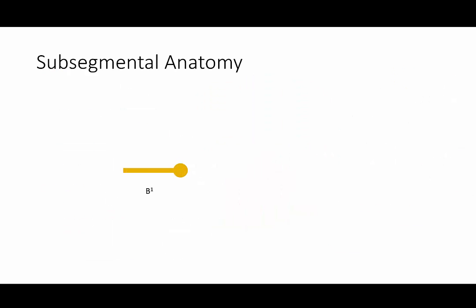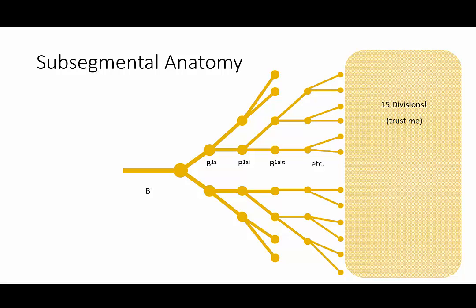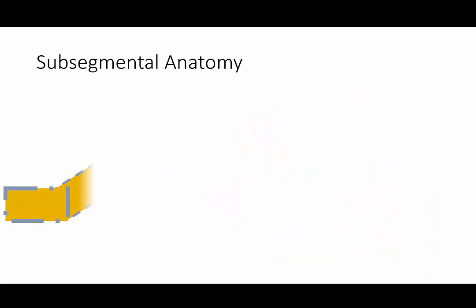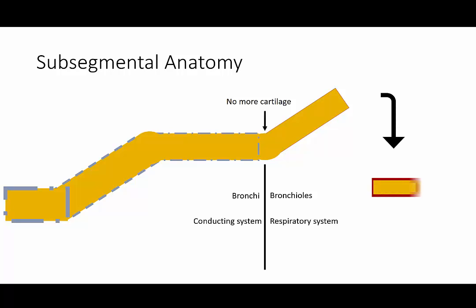As we travel further and further down the segmental bronchi, the airways continue to divide. The first five divisions are referred to as the large intrasegmental bronchi, and the next 15 divisions are referred to as the small intrasegmental bronchi. As the small intrasegmental bronchi divide further, cartilages become less frequent until they no longer make up a part of the airway wall. This marks the division between the bronchi and the bronchioles, and the divide between the conducting zone and the respiratory zone.